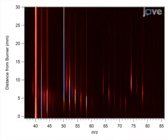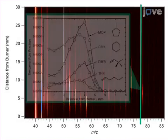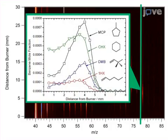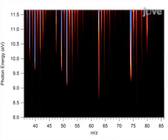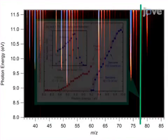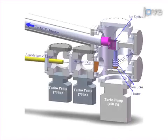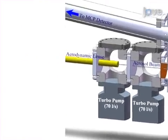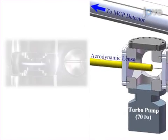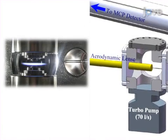Next, the concentration of these species is determined as a function of distance from the burner. The final step is to use a similar approach to study the chemical composition of combustion-generated soot particles, which are the results of the gas phase formation processes.